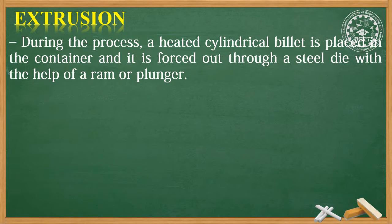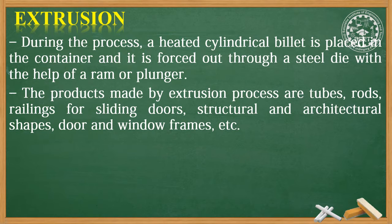During the process, a heated cylindrical billet is placed in the container and it is forced out through a steel die with the help of a ram or plunger. The products made by the extrusion process include tubes, rods, railings for sliding doors, structural and architectural shapes, door and window frames, etc.